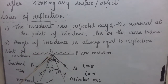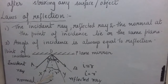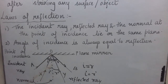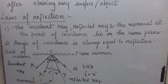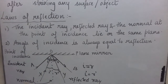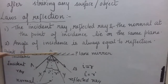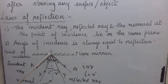Here I have shown a dotted line at the centre point O, which is perpendicular to the plane of the mirror. This dotted line is called the normal. Normal means perpendicular to the plane of the mirror at its centre.